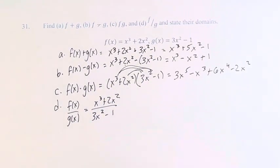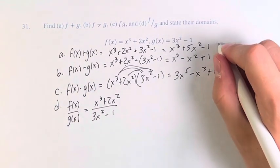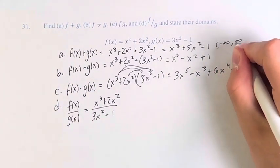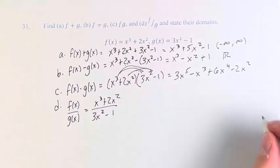Now, to state their domains, a, b, and c all have no restrictions on their domains, so it's all real numbers. You can write this as negative infinity to infinity or the symbol for all real numbers. Either way, that works.